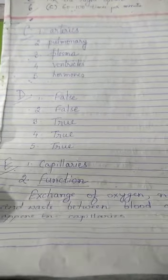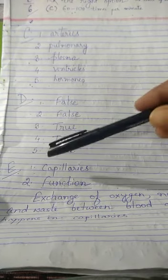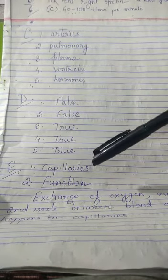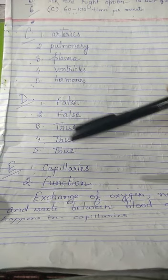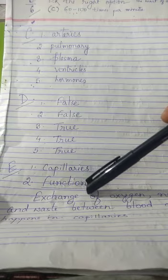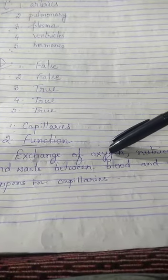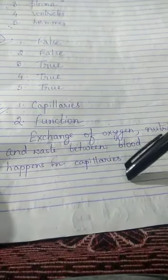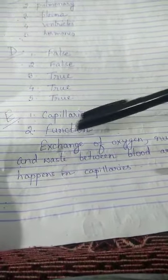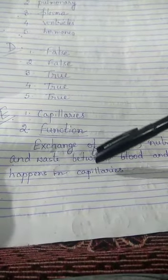Next there is one diagram-based question. They have told to identify the diagram as well as to write the function. So the diagram — you can write blood vessels, or a better answer will be capillaries. Second, they have asked for the function of capillaries. The function of capillaries is exchange of oxygen, nutrients and waste between blood and tissues happens in capillaries. This is the answer of subpart E — the function of capillaries.